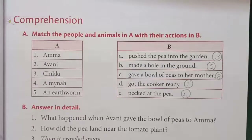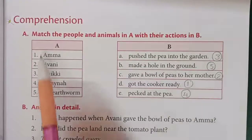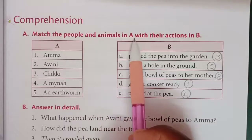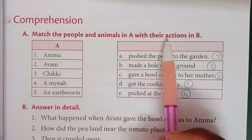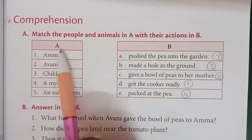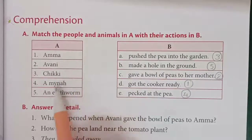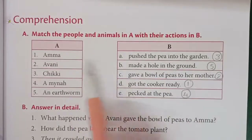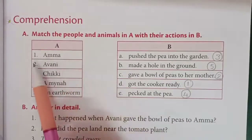Now children, let us start doing the exercises of lesson 4. See page number 39. Match the people and animals in A with their actions in B. On side A, the names of some people or animals are given, and on the other side their actions are given. So we have to match them with their actions.